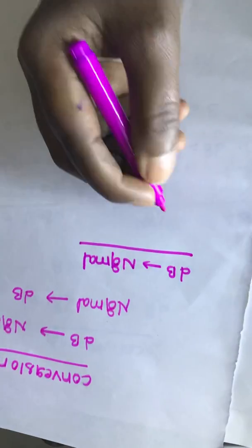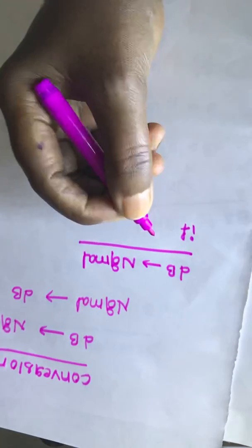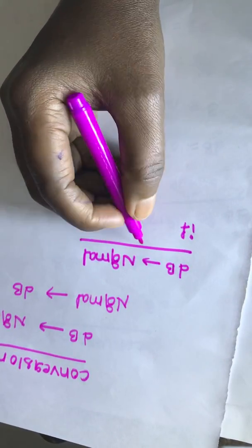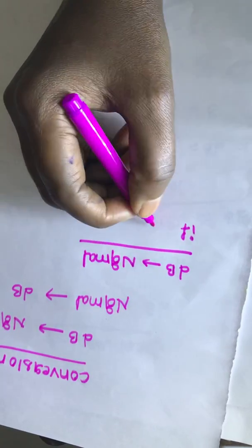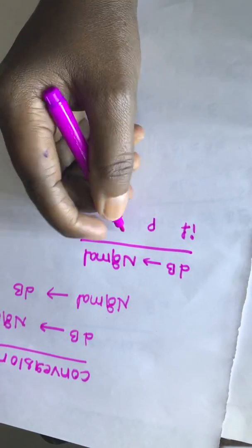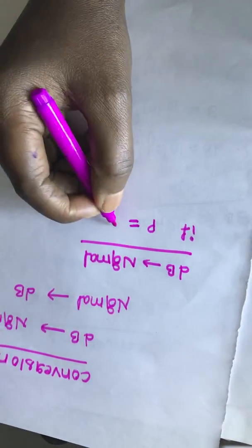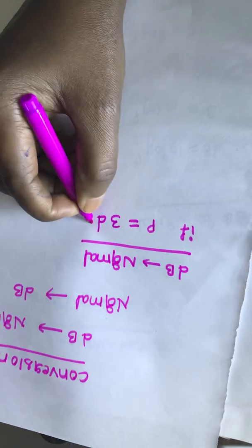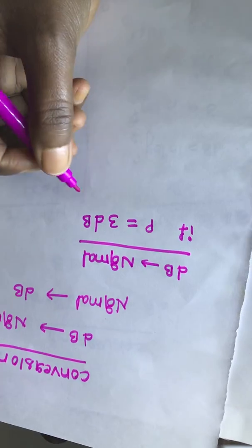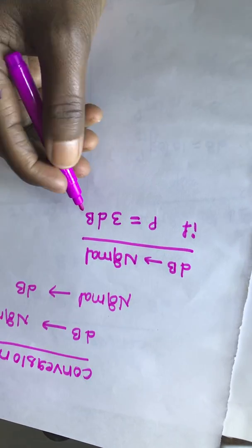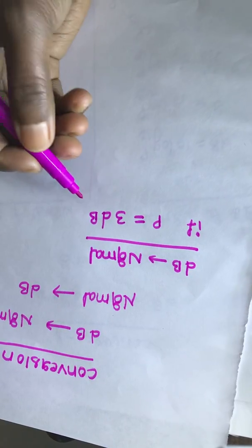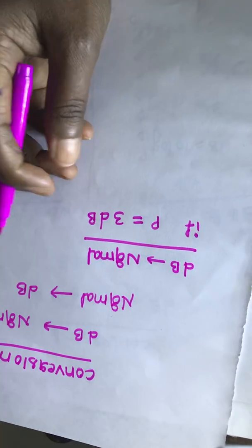Suppose if they gave power in dB which is equal to P = 3dB. The given power it is in dB, that is 3dB. Now we will convert this into normal scale, how we will convert it.